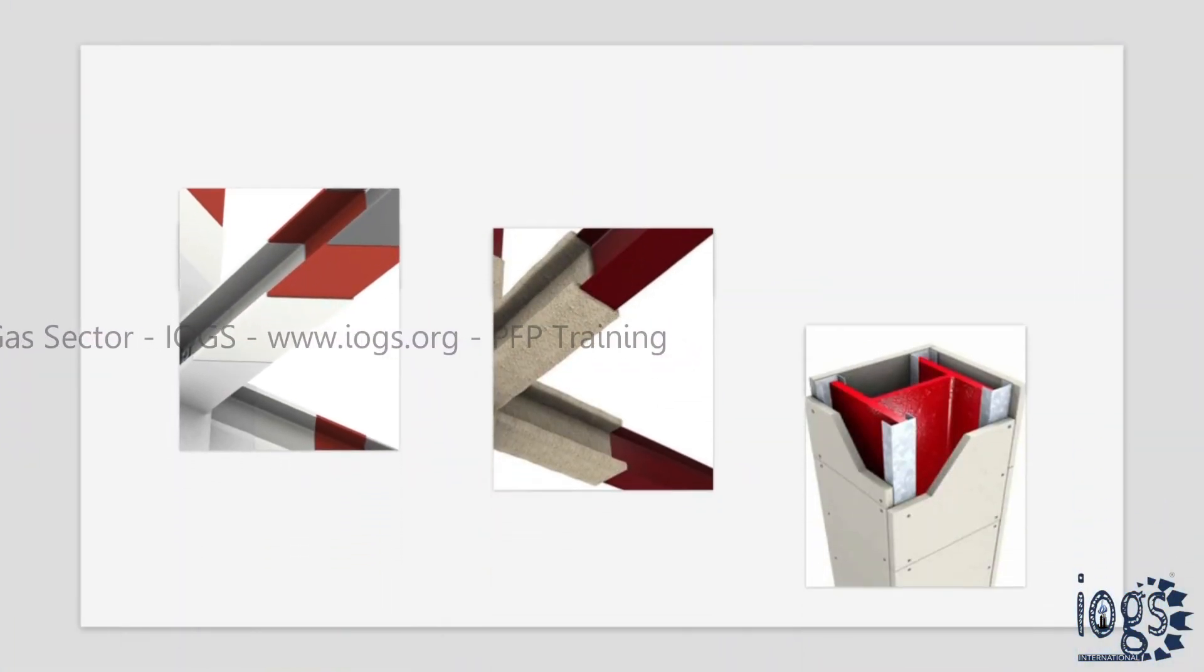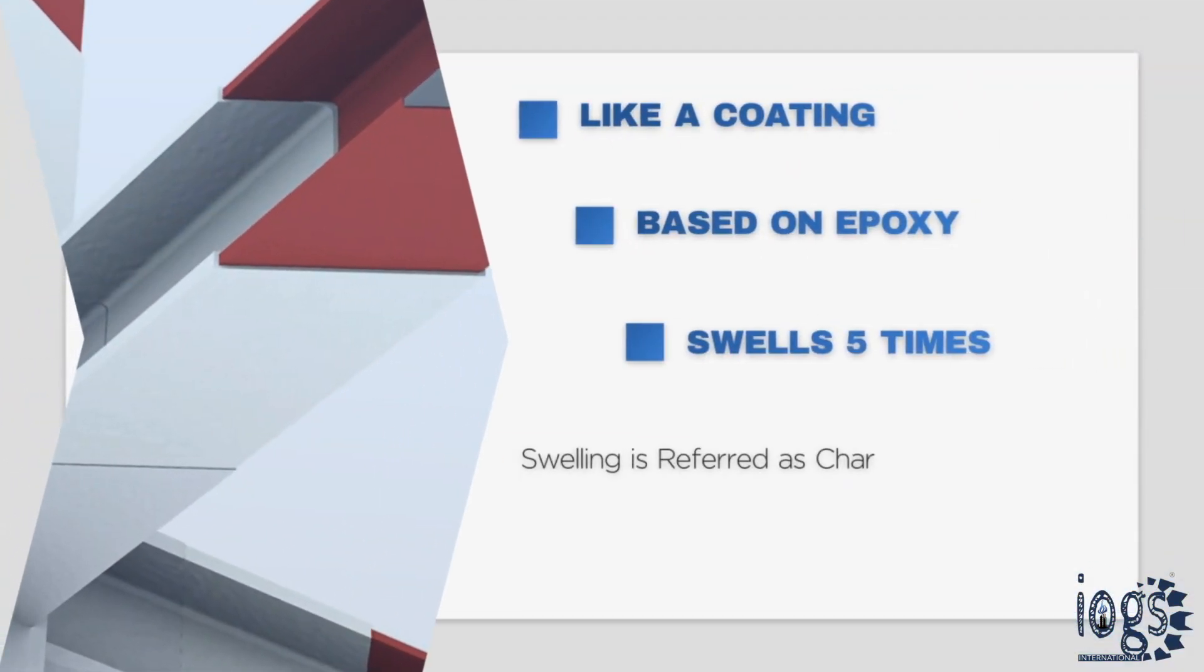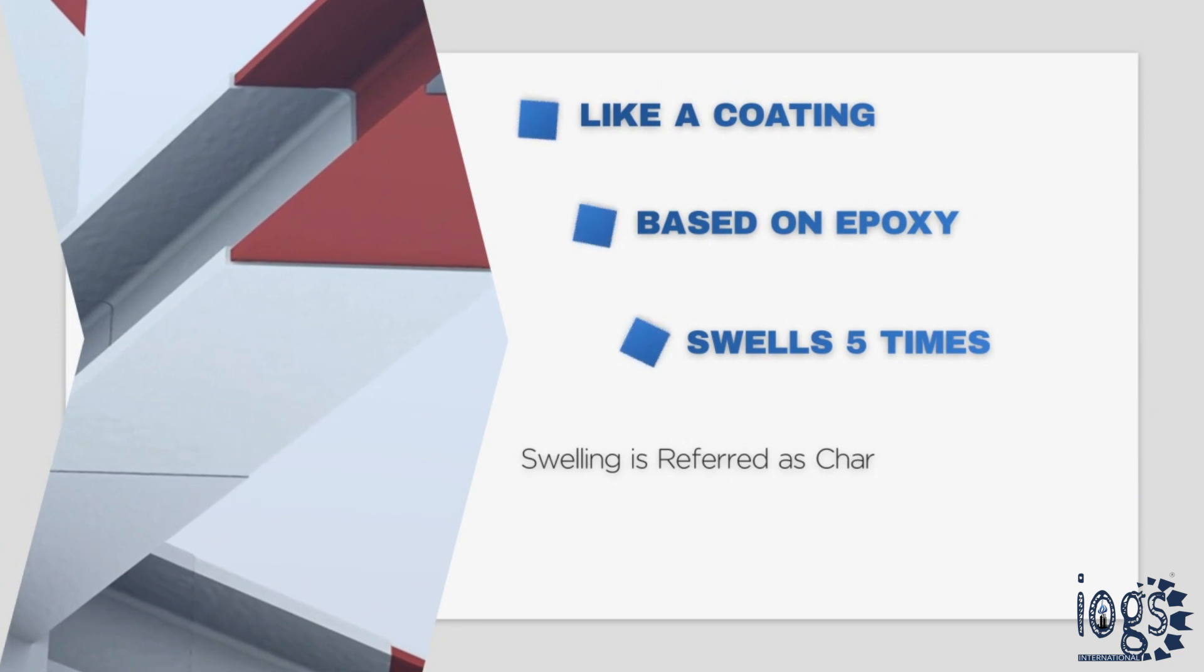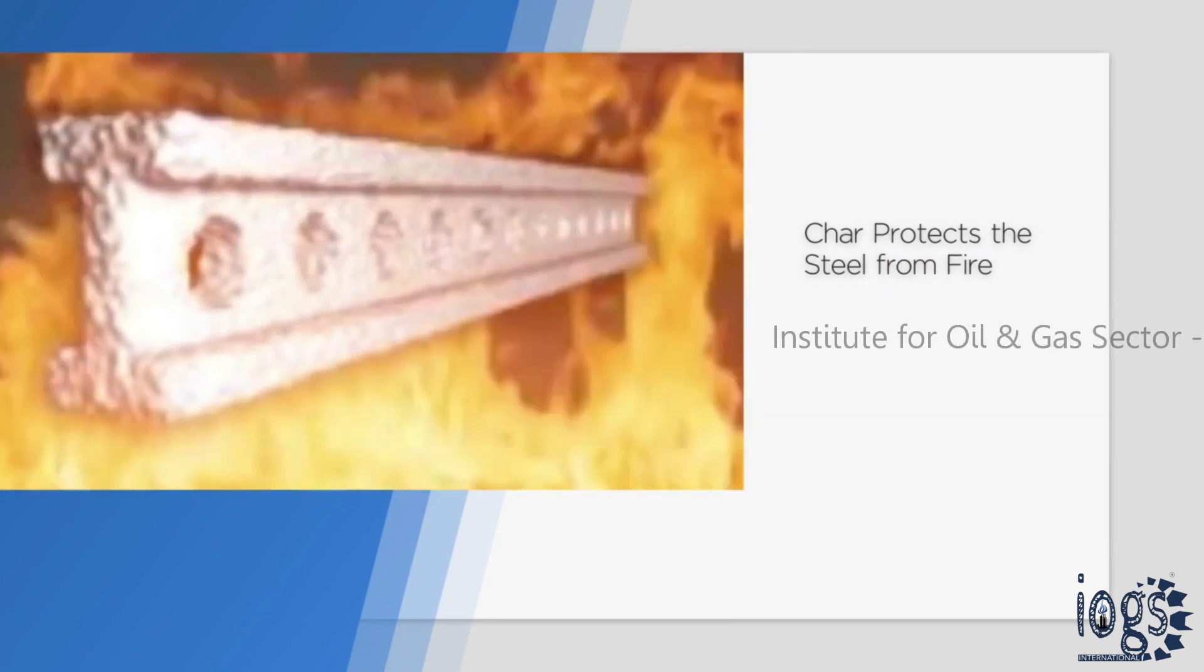Various fireproofing products can be used in making steel fireproofing. Intumescent fireproofing, often referred to as intumescent coating, is based on epoxy. The coating swells up to five times its original thickness to form an insulating char, and the char protects the steel from fire.